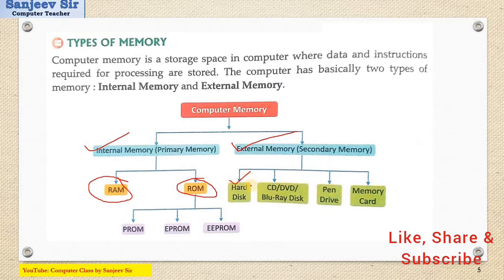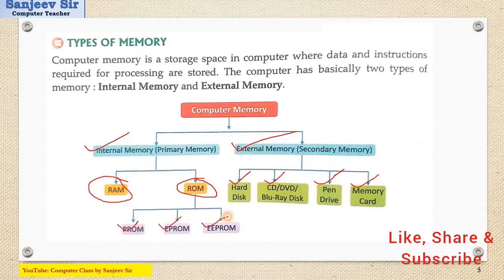Secondary memory is used for future use — we store data using the hard disk, storing files, movies, music for future use. CD and DVD are also used for storing project files, presentations, and songs. Pen drive is used for transferring data from one computer to another, and also from mobile to laptop. Memory card is used in mobile phones for storing large amounts of data. ROM is of two types: PROM (Programmable Read-Only Memory), EPROM (Erasable Programmable Read-Only Memory), and EEPROM (Electrically Erasable Programmable Read-Only Memory).